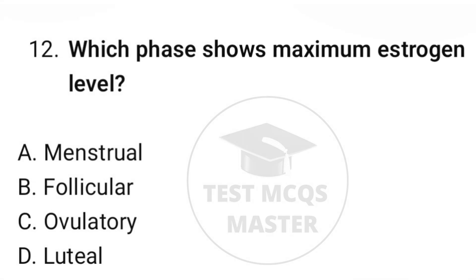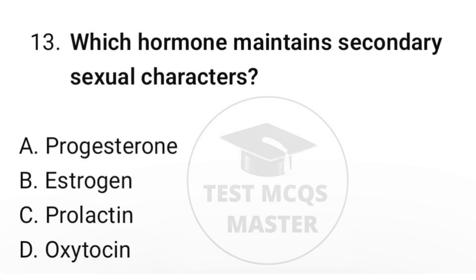Question number eleven: which structure lines the uterine cavity? Question number thirteen: which hormone maintains secondary sexual characters? The correct option is B, estrogen.